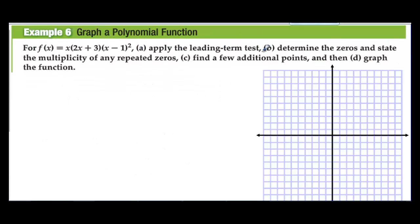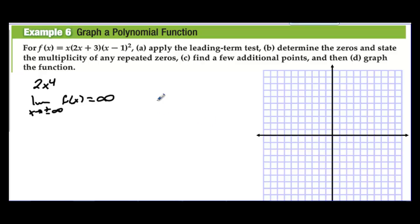For f(x) given in factored form, apply the leading term test. If multiplied out, the leading term would be 2x · x · x · x = 2x⁴, which means the limit as x approaches either plus or minus infinity of f(x) is positive infinity on both sides. The zeros are x = 0, x = −3/2, and x = 1 with a multiplicity of 2 — meaning that zero counts twice. Plotting those: zeros at 0, −1.5, and 1.